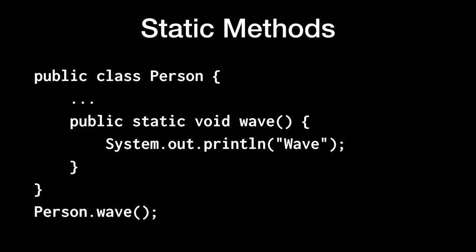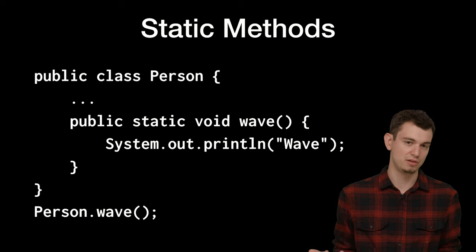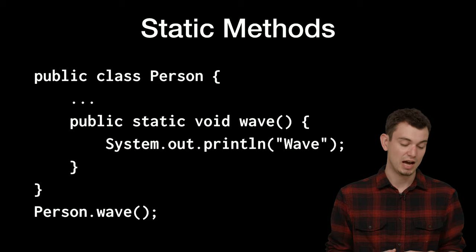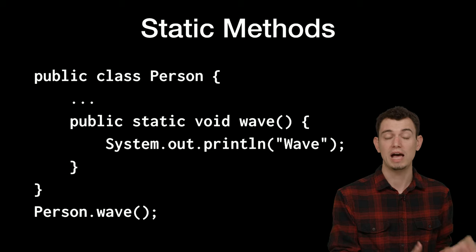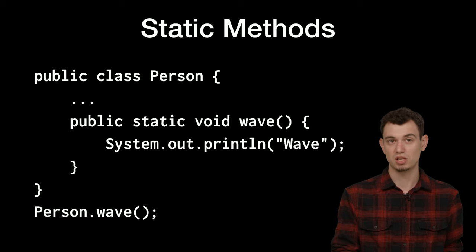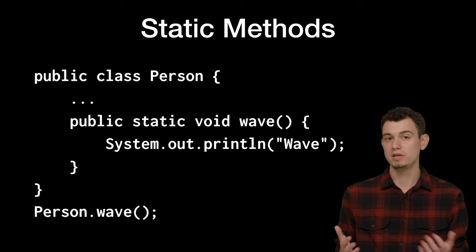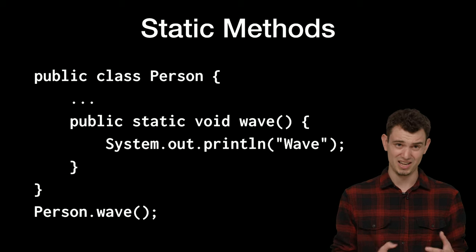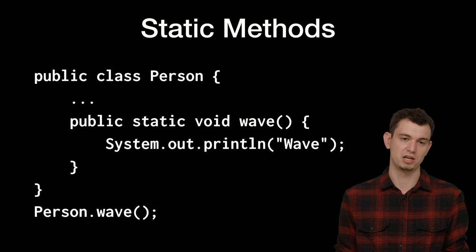We can also have static methods — methods you can call on a class without having an instance of it. Instead of 'public void wave', you say 'public static void wave'. To call it, you reference the class itself — capital Person.wave() — not an object. This is helpful when it doesn't really make sense to instantiate a class just to call a method.